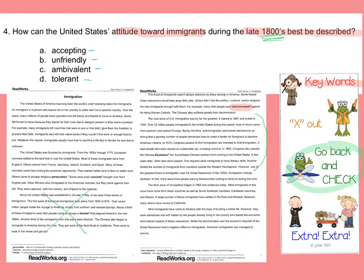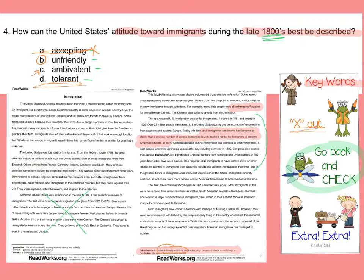There's a great word: 'discriminated against.' Discriminated means treated differently or unfairly. We've also got anti-immigration sentiments. So we can start to see that people were not accepting — we can eliminate 'accepting.' If immigrants are being treated differently or unfairly, that certainly is not accepting. If you look at tolerant, tolerant means pretty much the same thing as accepting — so we can eliminate that as well. That gives us two possibilities: unfriendly and ambivalent.